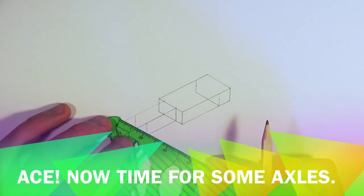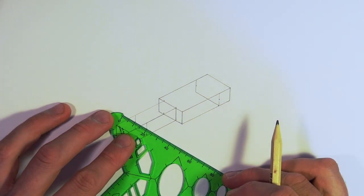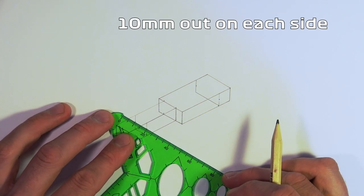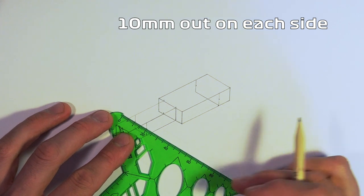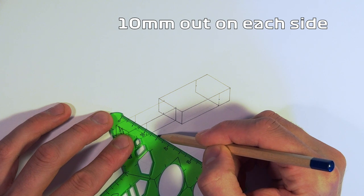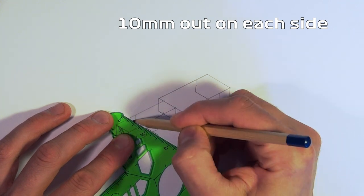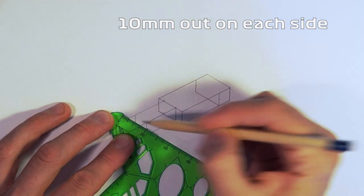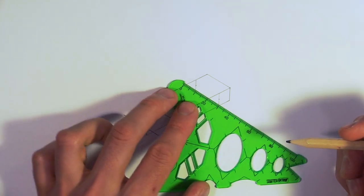Now time to draw our axles on. Position the ruler so that you've got one of the centimeter or bigger markings next to your dots, and we're going to mark 10 millimeters out from each side of the chassis. Using the ruler, mark 10 millimeters out.